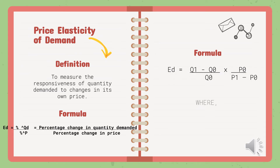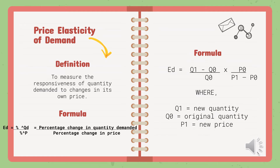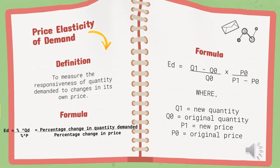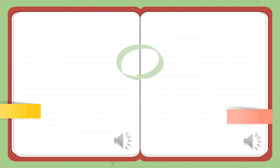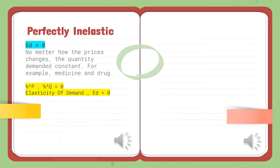These are the degrees of Price Elasticity of Demand. For Perfectly Inelastic demand, quantity demanded does not change regardless of price. For example, the quantity demanded of medicine remains the same even when the price increases, because consumers cannot change their consumption based on price. The value of Price Elasticity of Demand equals zero.